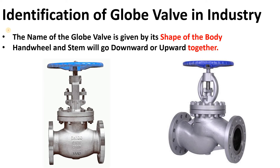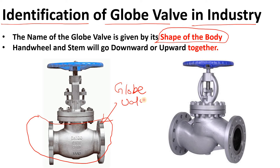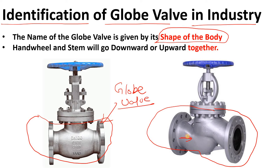How to identify a globe valve in an industry: first, it is easy because of its spherical body shape. Most globe valves have a spherical body. For modern valves where the body shape is not spherical, you will see an arrow marking on the valve body indicating flow direction, which differentiates it from a gate valve.